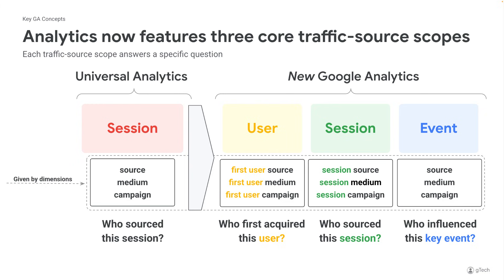User scope dimensions will be called first user source, first user medium, first user campaign, and so on. Session scope dimensions will be called session source, session medium, and session campaign. And event scope dimensions are just source, medium, and campaign.